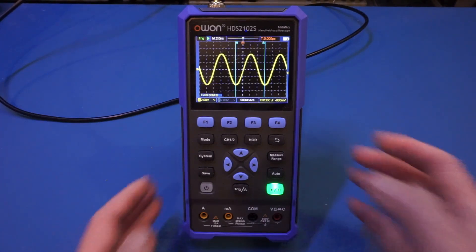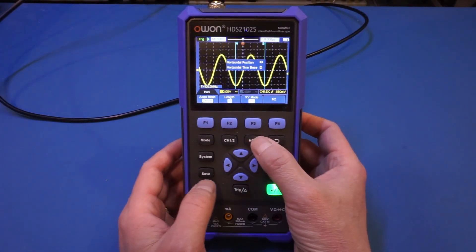Now let me change the horizontal to 5 ns per division so we can see whether or not we are measuring it correctly.